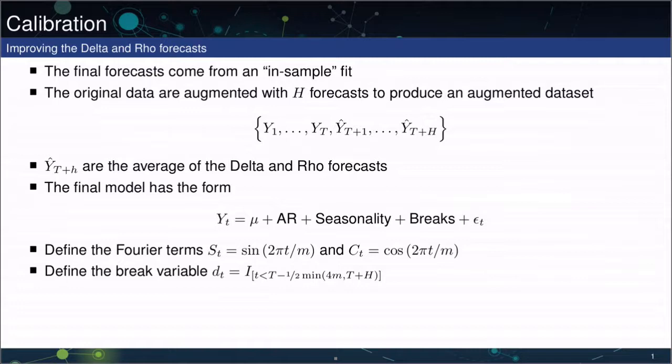The idea behind calibration is as follows. We have the original data, y1 through yt. The original data are x1 through xt, but the y's are simply the x-transformed using, for example, the log, or possibly not at all, in which case they're in the level. And then these are going to be augmented with H forecasts. Cap H is the largest forecast horizon that we're actually producing forecasts for.